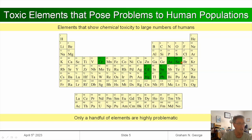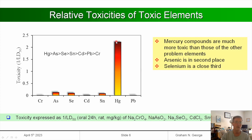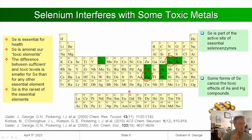Taking a chemist's view of toxicity, I've plotted the reciprocal of the oral LD50 — the lethal dose for 50% of rats at 24 hours in mg/kg. Amongst the problematic toxic elements, mercury is by far the most toxic; arsenic is in second place with selenium a close third, followed by tin, which is more toxic than lead.